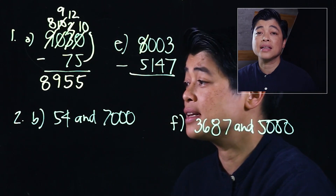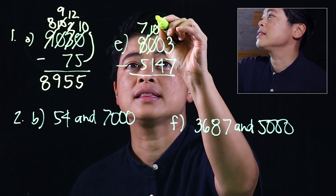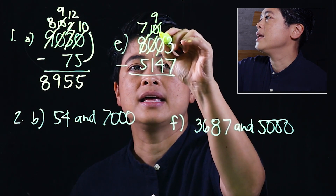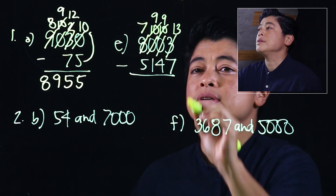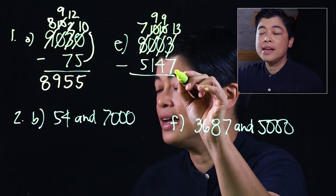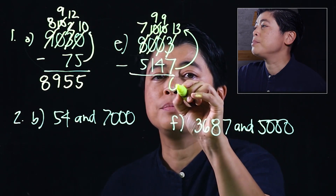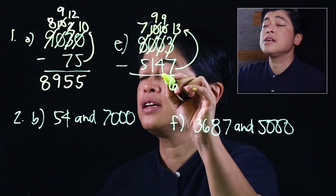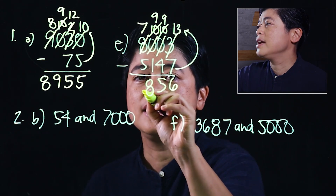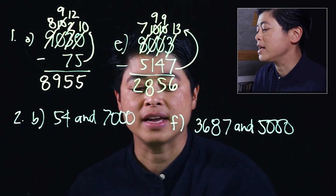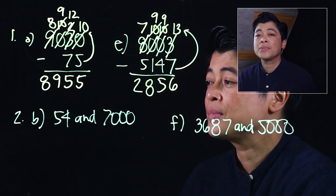We need to borrow as far as the thousands. Cancel that, making that ten, then nine, then ten, then nine, and this becomes thirteen. Seven needs a three to get to ten and another three to get to thirteen, which makes it six. Nine minus four is five, nine minus one is eight, and seven minus five is two — making our answer two thousand eight hundred and fifty-six.